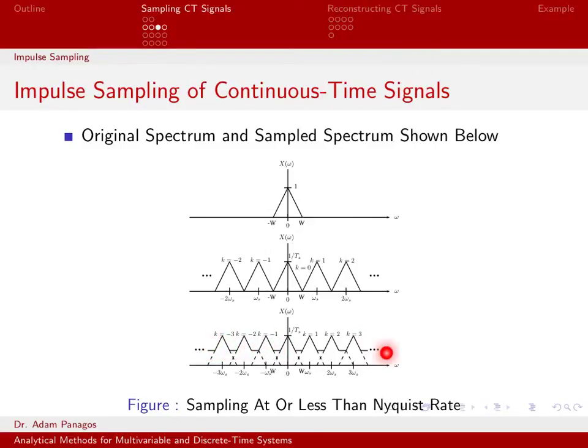So at this point, we are sampling what we call less than the Nyquist rate. And by viewing the spectrum of the impulse sampled signal, I can no longer see the original triangle that I started with. There's all this distortion going on because of this overlap.